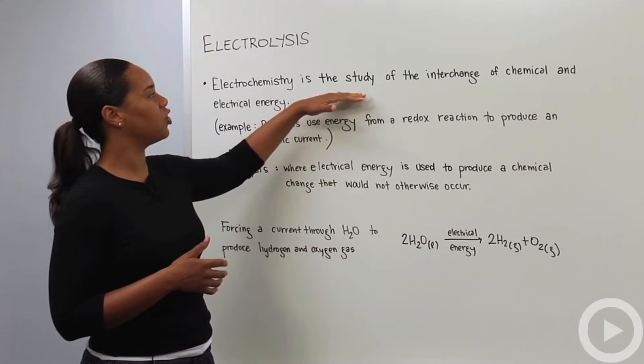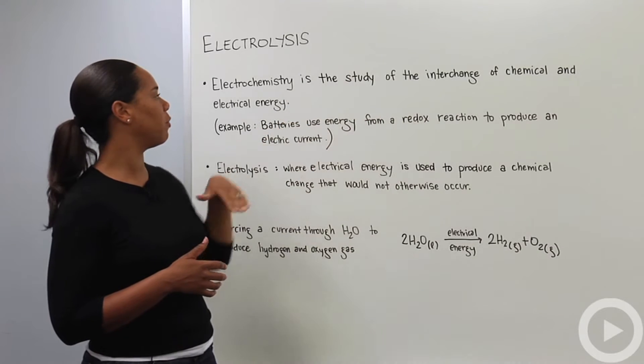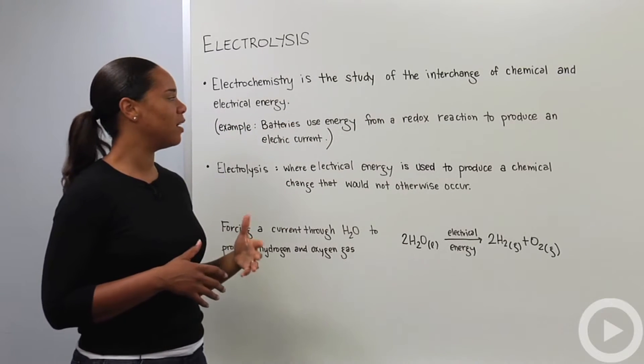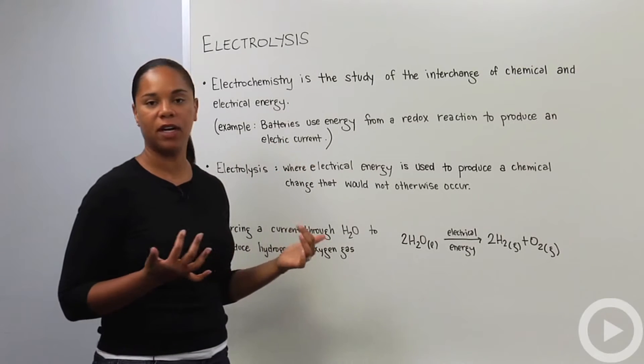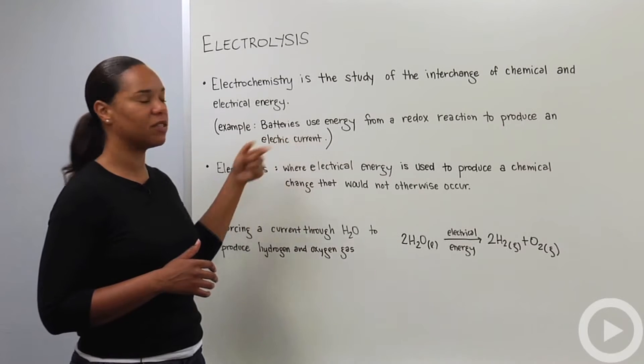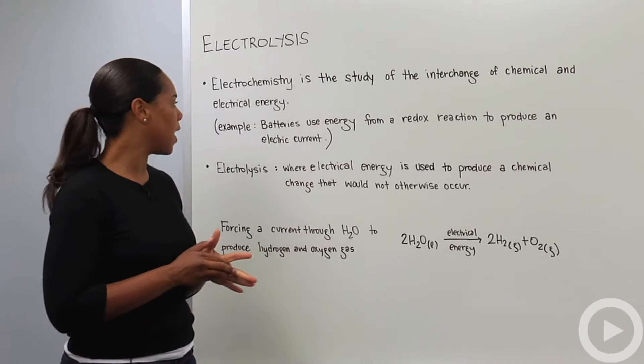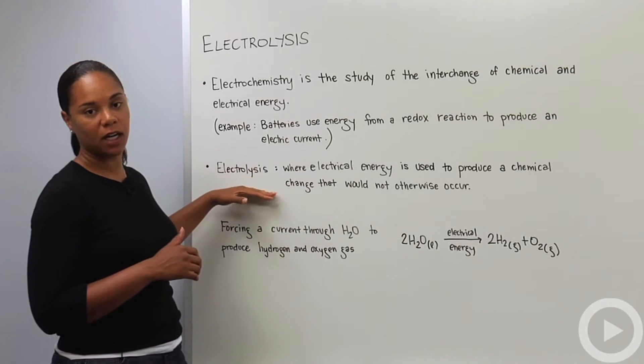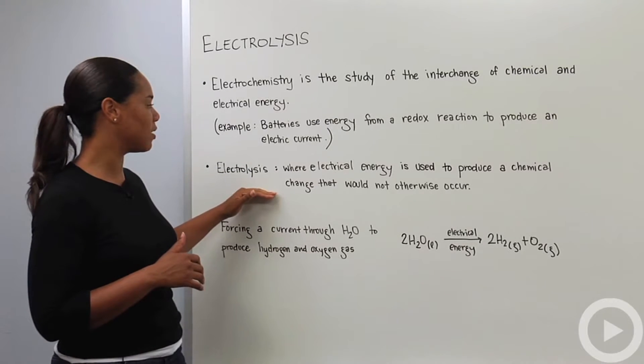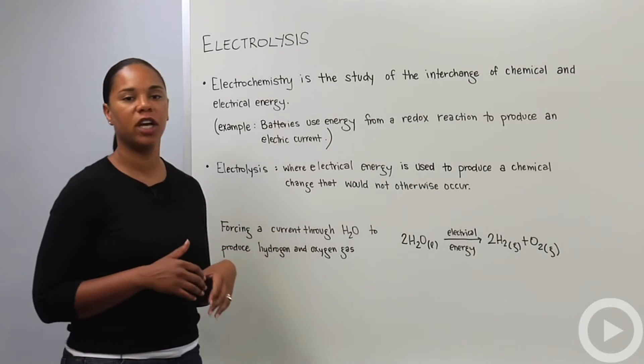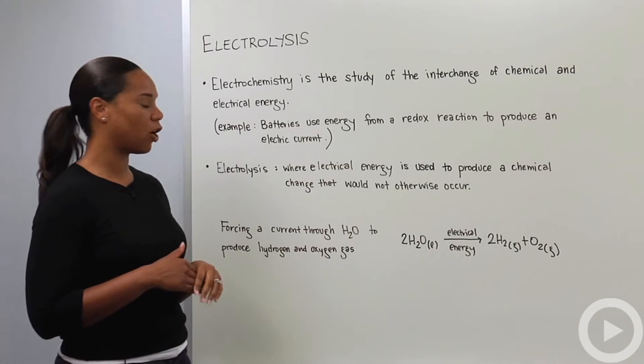Electrochemistry is the study of the interchange of chemical and electrical energy. A simple example is batteries that you use every day. Basically they create a redox reaction to produce an electric current. More specifically under electrochemistry, we have the process of electrolysis. That's when electrical energy is used to produce a chemical change that would otherwise not occur.